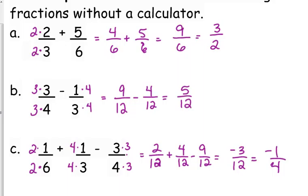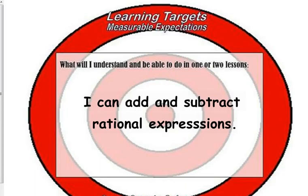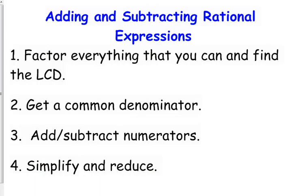We're going to throw some variables in there and see what's the same and what's a little bit different — we're going to add and subtract rational expressions today. First thing: you should always factor everything that you can and find the least common denominator. There are actually some cases where you need to simplify before we even start, which will make your life a lot easier. After you find the LCD, make all of your rational expressions have that common denominator, then add or subtract numerators, simplify, and reduce.